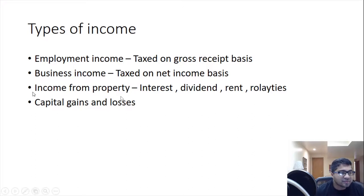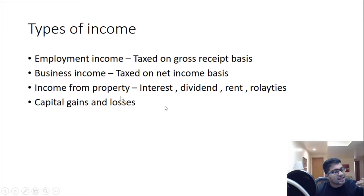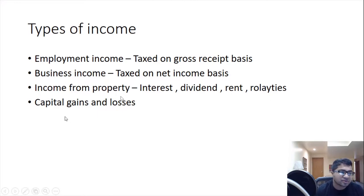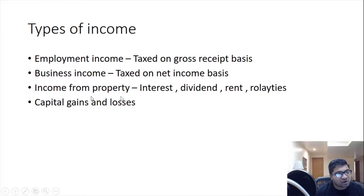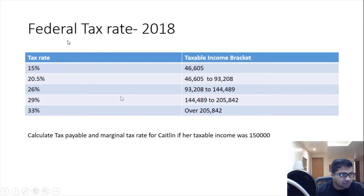Income from property means you have invested in assets and those assets generate income without you selling them — such as interest, dividends, rent, or royalties. Capital gains and losses arise when you buy an asset and sell it. If you get a gain, that is a capital gain; if you get a loss, that is a capital loss.